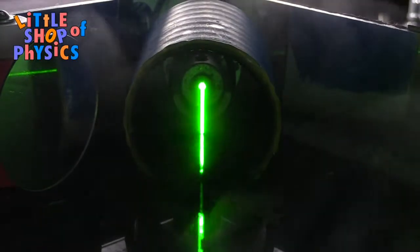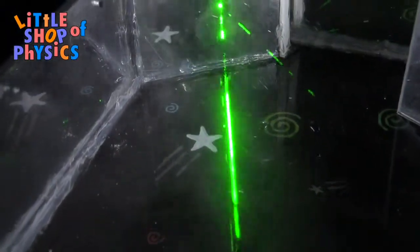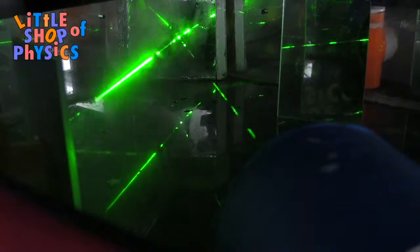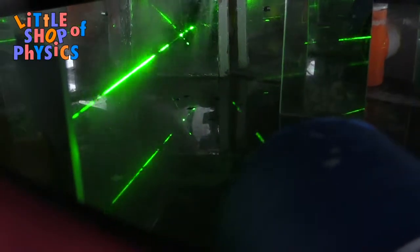This is a phenomenon called scattering. So the laser beam hits the droplets of water and bounces off in all sorts of random directions, including in your eye, and that's what lets you see it.